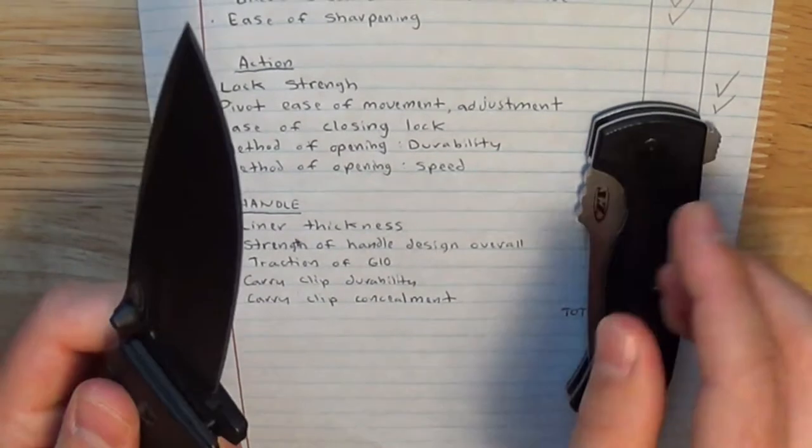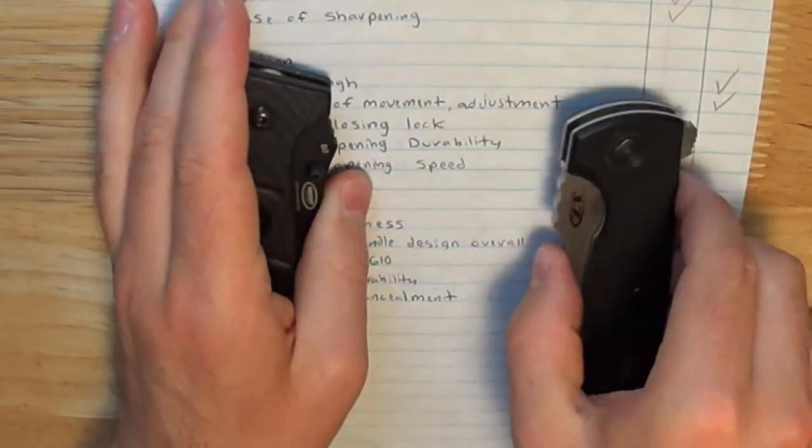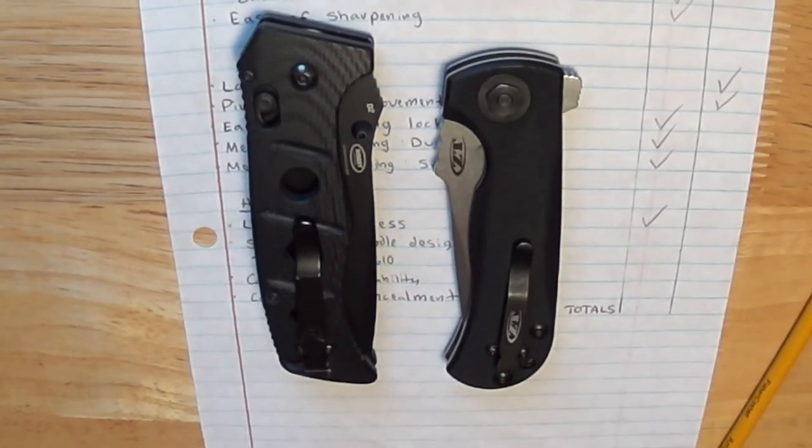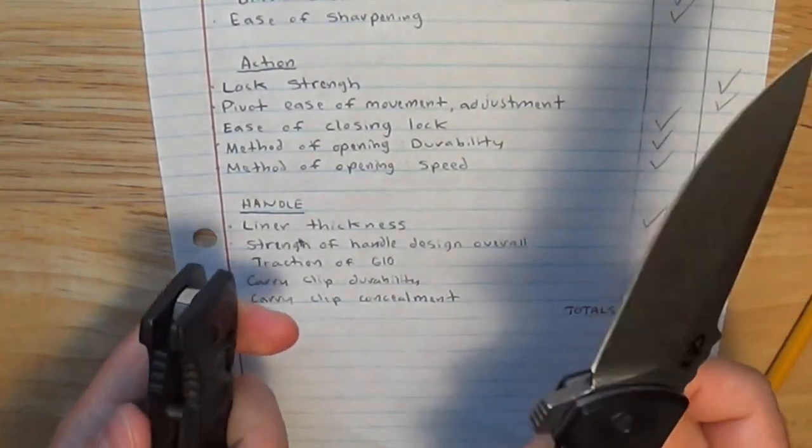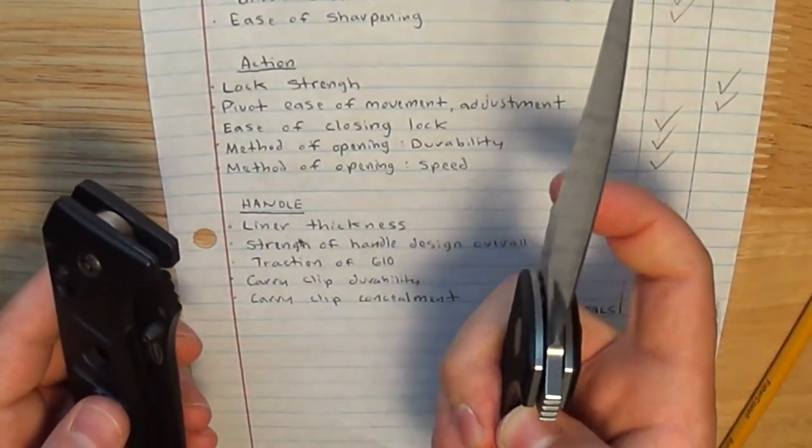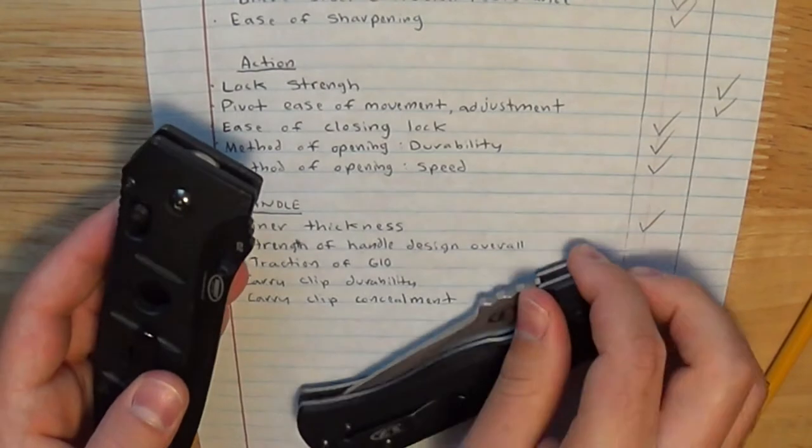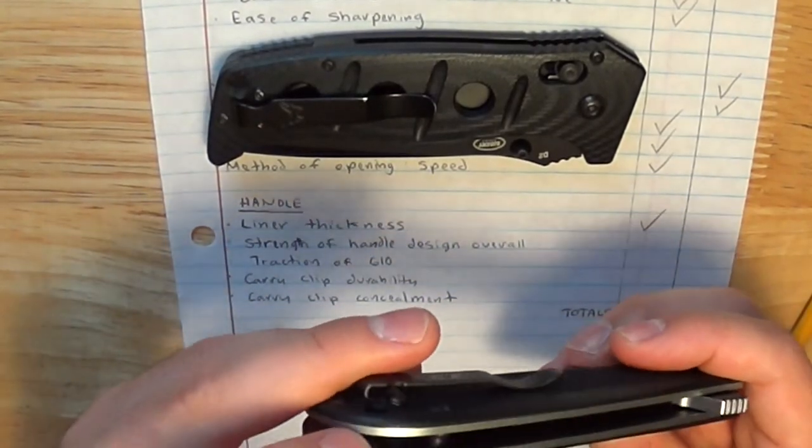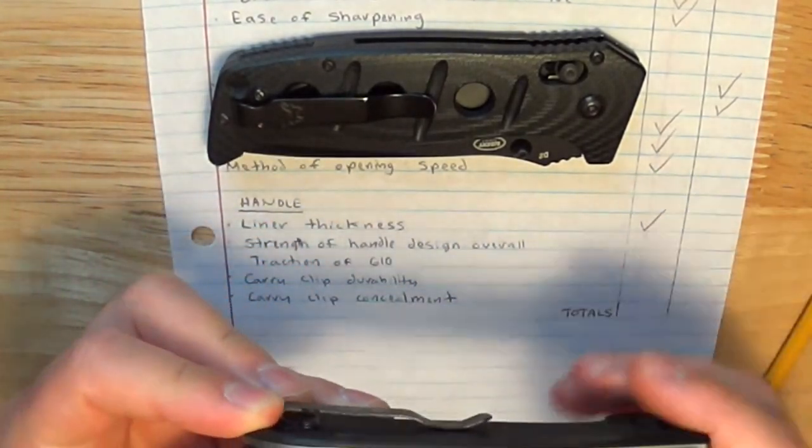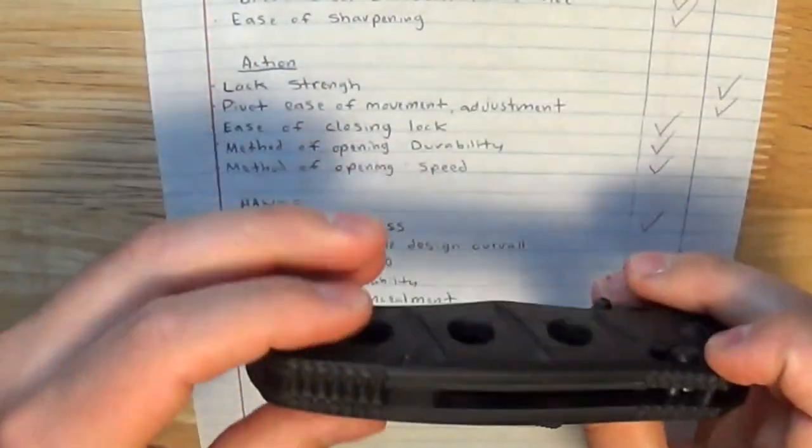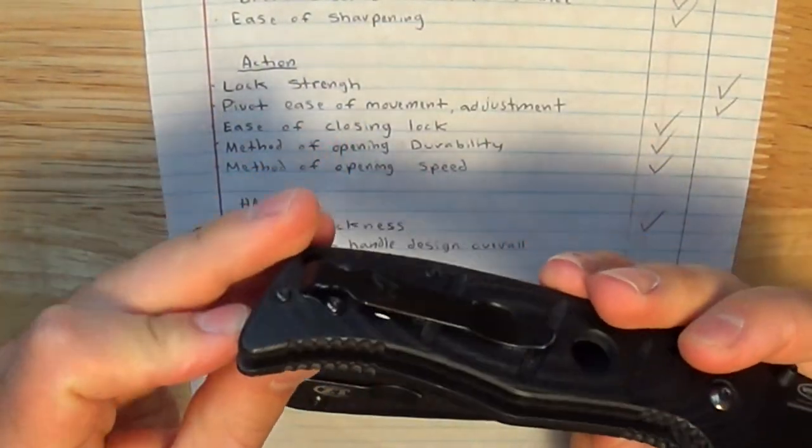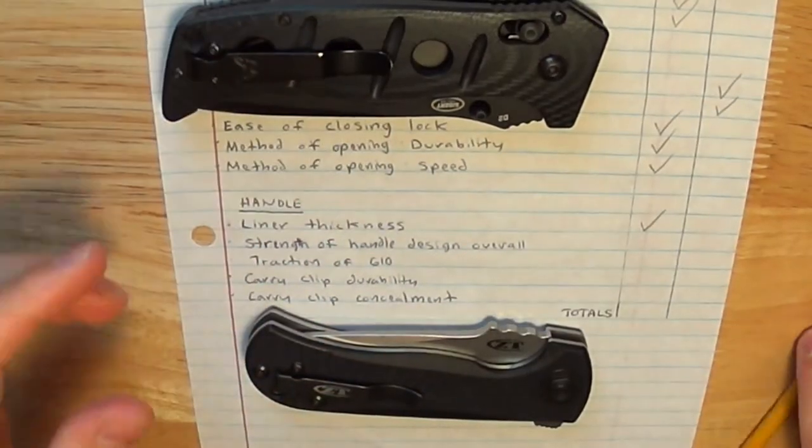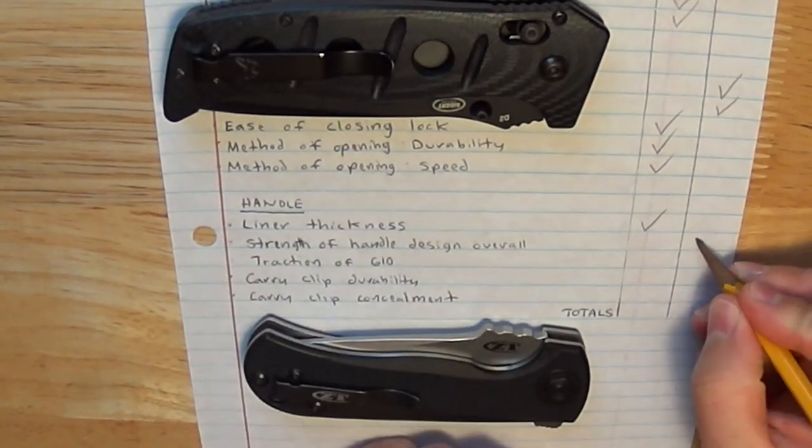Strength of handle design overall, both very strong knives. You could probably run these over with a pickup truck or a car and they'd be okay. I'd say a semi is pushing it. That would probably crush most knives. But I'm going to give that point to Benchmade. They have a G10 backspacer here, and normally I'm not as crazy about backspacers as opposed to standoffs. But this is a very well-made backspacer. It doesn't catch the blade at all when you shut the knife, and it just makes it really strong. I think in some ways G10 is actually stronger than steel, so we're going to give that to Benchmade.